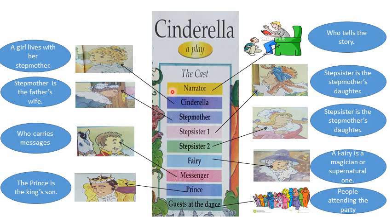Here we have the cast, or the characters — the people who are acting in this play. The first character we have is the narrator. Narrator means the person who tells us the story. Sometimes your grandmom or your grandfather sits with you and tells you a story. So the narrator means the person who tells the story.